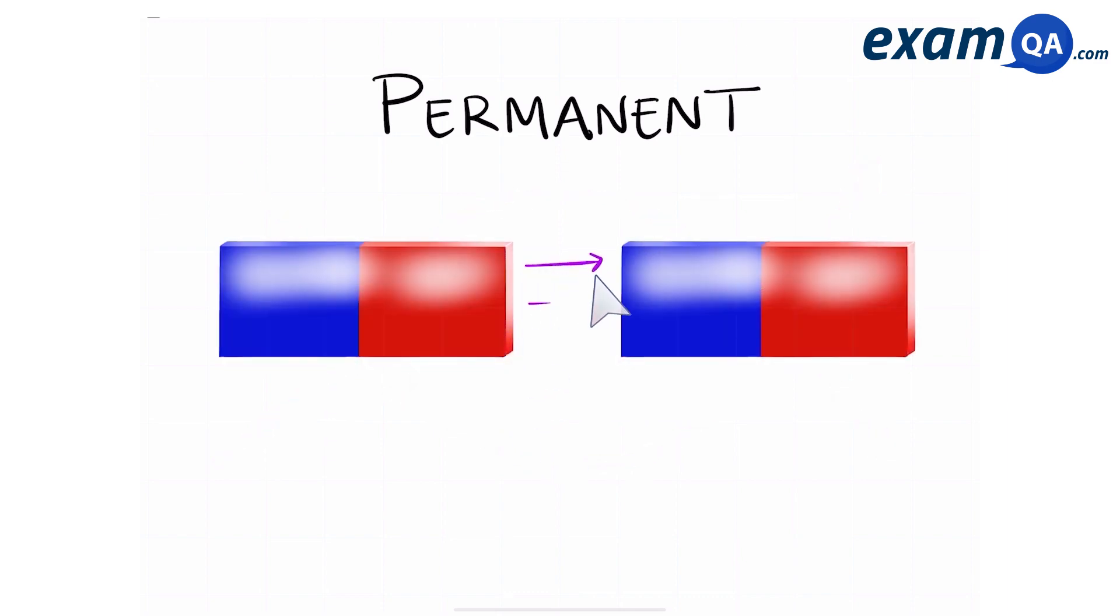If two permanent magnets are placed next to each other, the magnetic fields will interact. This will either result in attraction or repulsion.